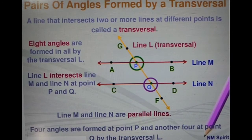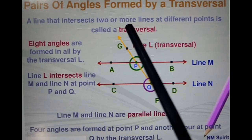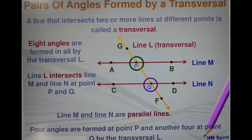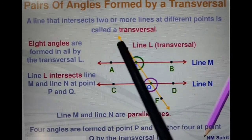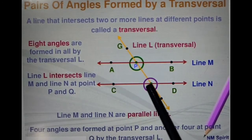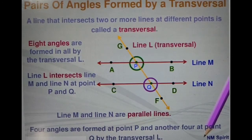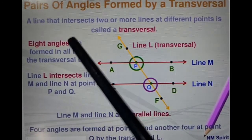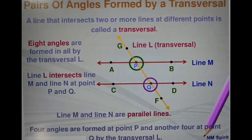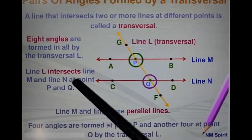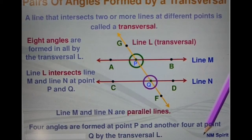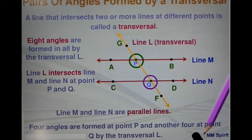Next, a very important topic: the pair of angles formed by the transversal line. A line that intersects two or more lines at different points is called a transversal line. When this line cuts a pair of parallel lines at two different points it is called a transversal line. Here lines M and N are parallel lines and line L is the transversal line, cutting at points P and Q. Eight angles are formed in total — four angles at point P and another four at point Q by the transversal line.